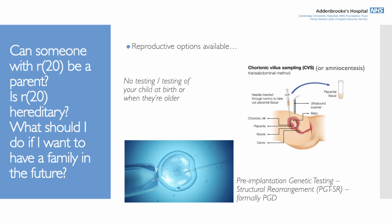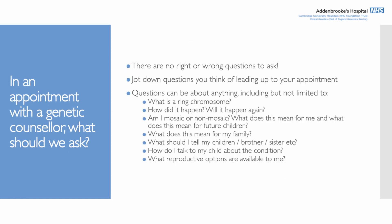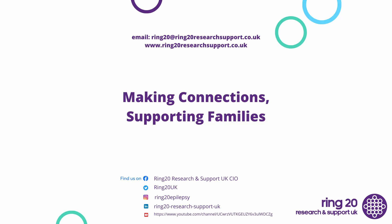The last question is: what should I ask my genetic counsellor? There are no right or wrong questions — nothing is too small. We recommend jotting down any questions you think of leading up to your appointment. Topics might include: what is a ring chromosome, how did it happen, will it happen again, questions about mosaicism, family planning, other family members, how to talk to your child about the condition, sharing information with family, and questions about reproductive options. I'm happy to take any further questions now.